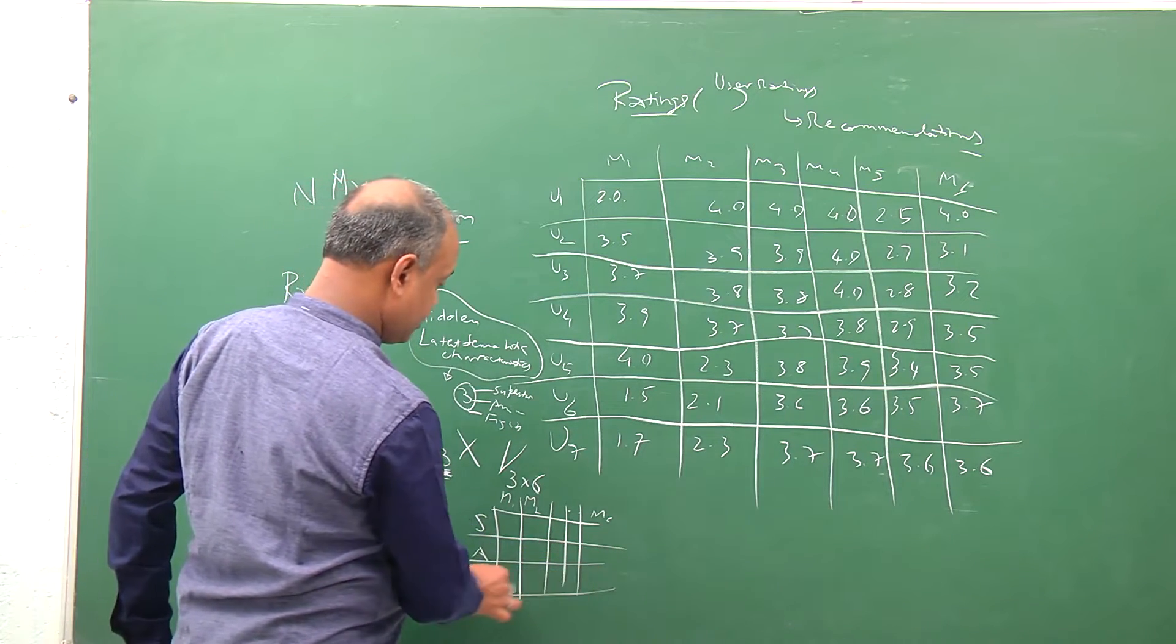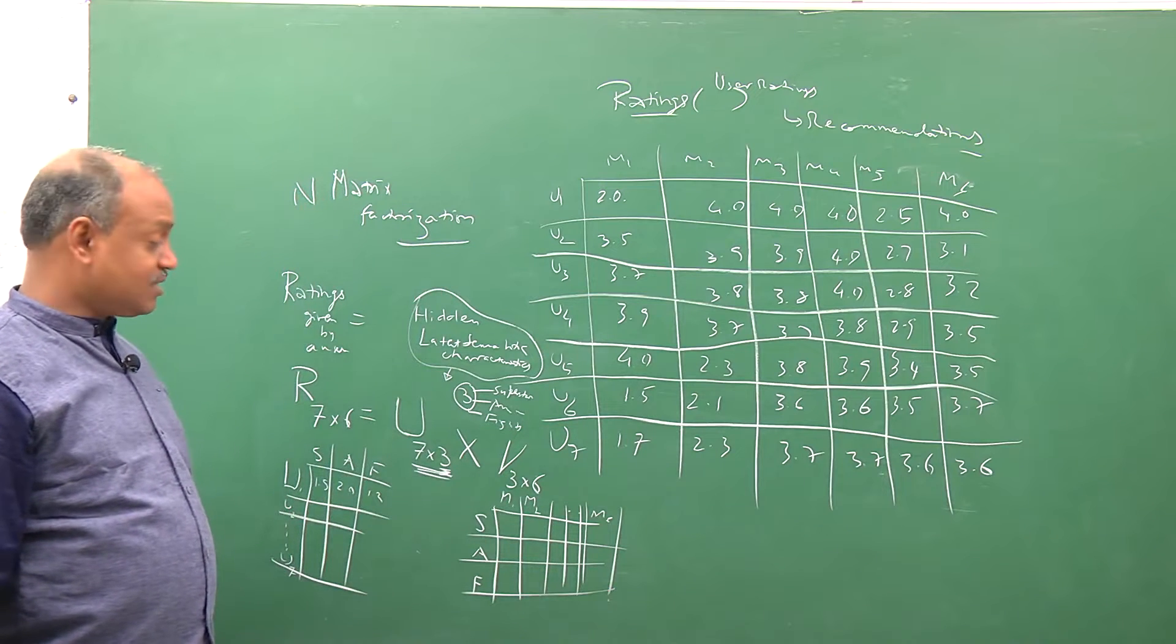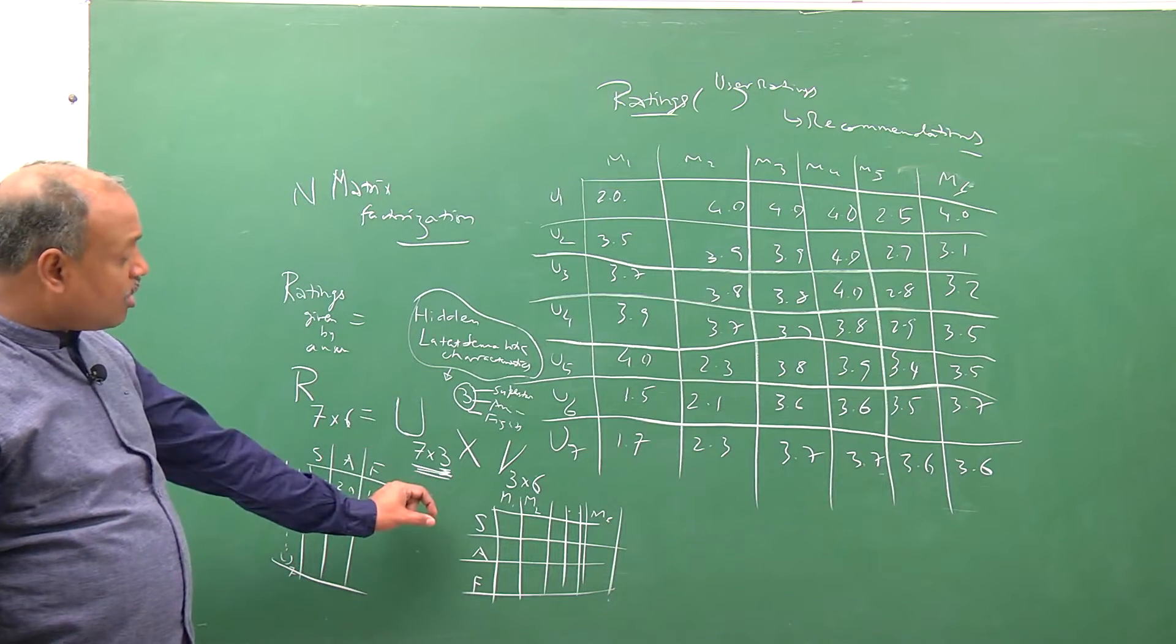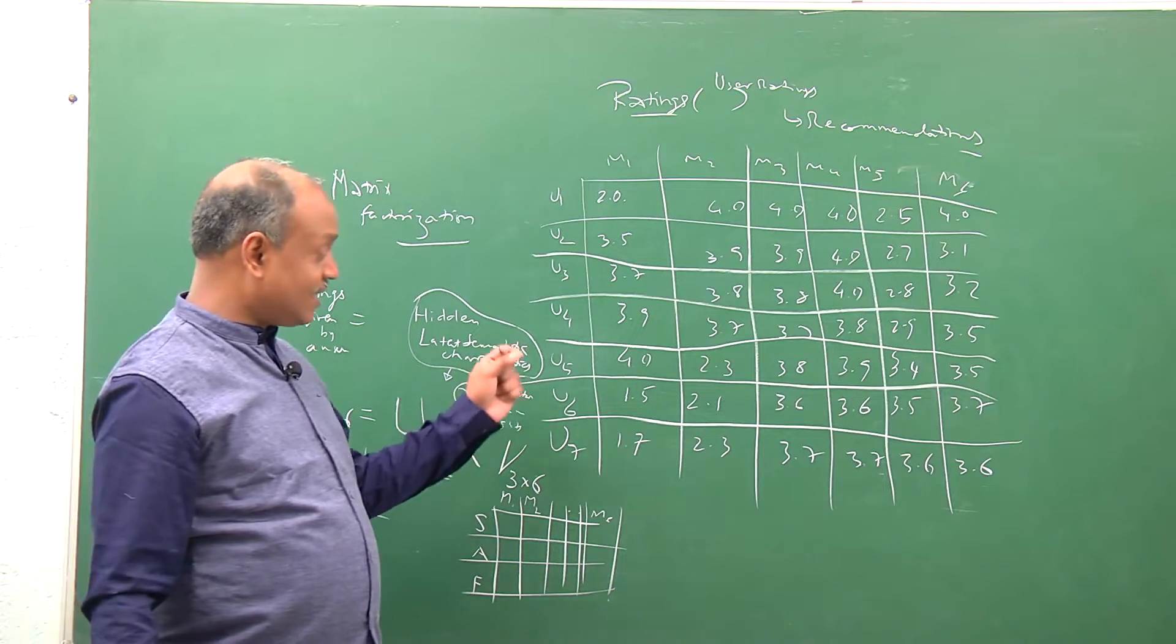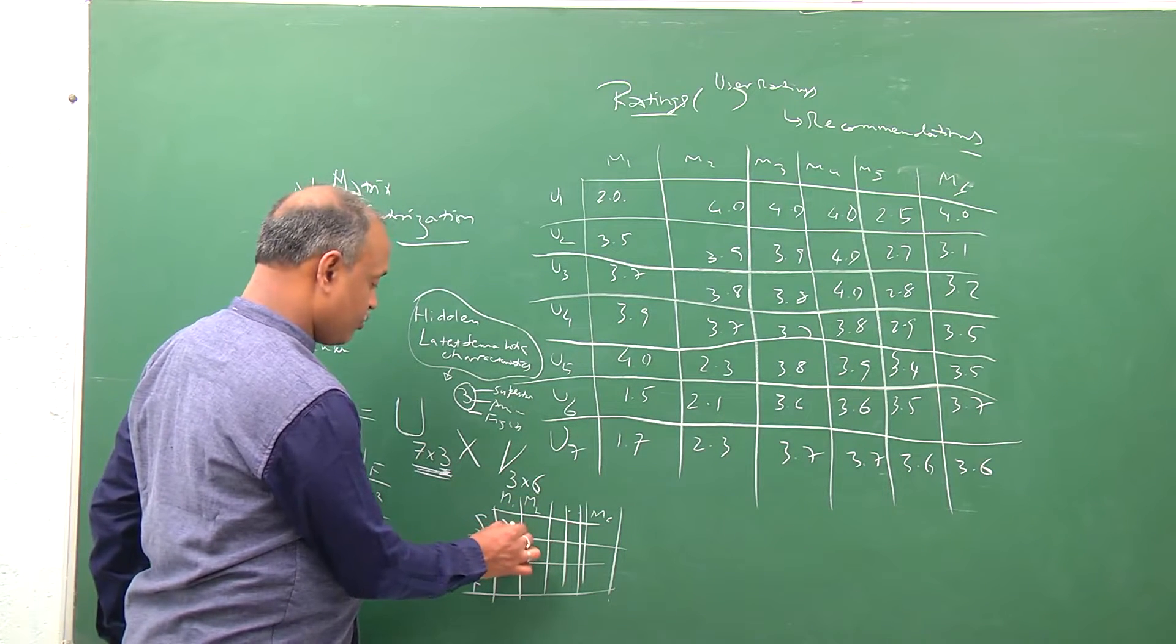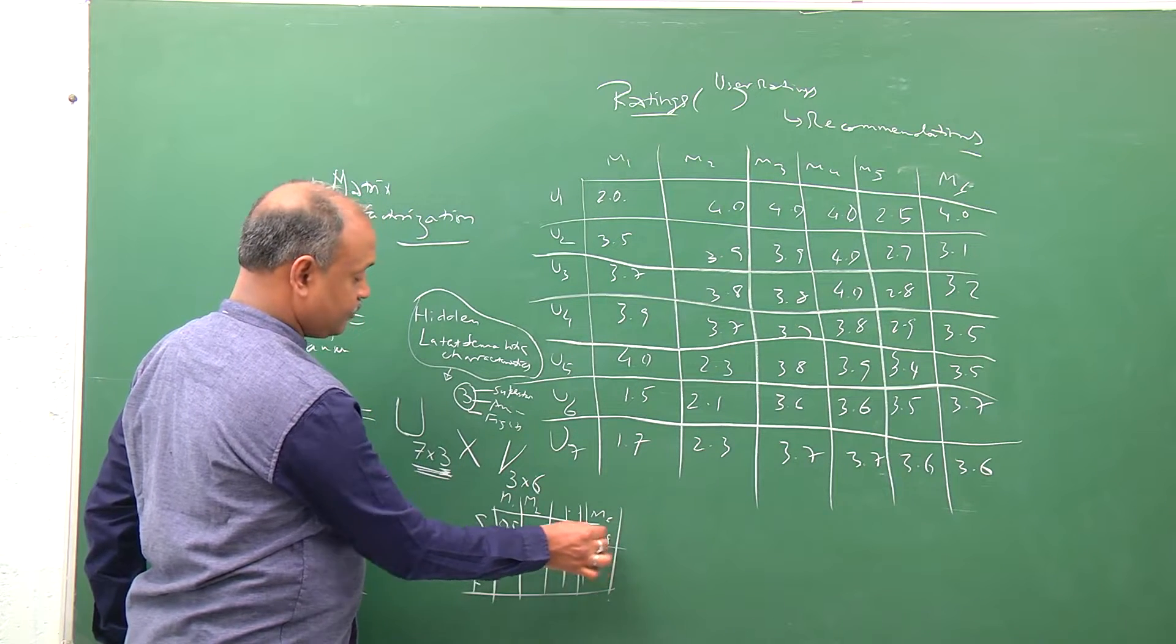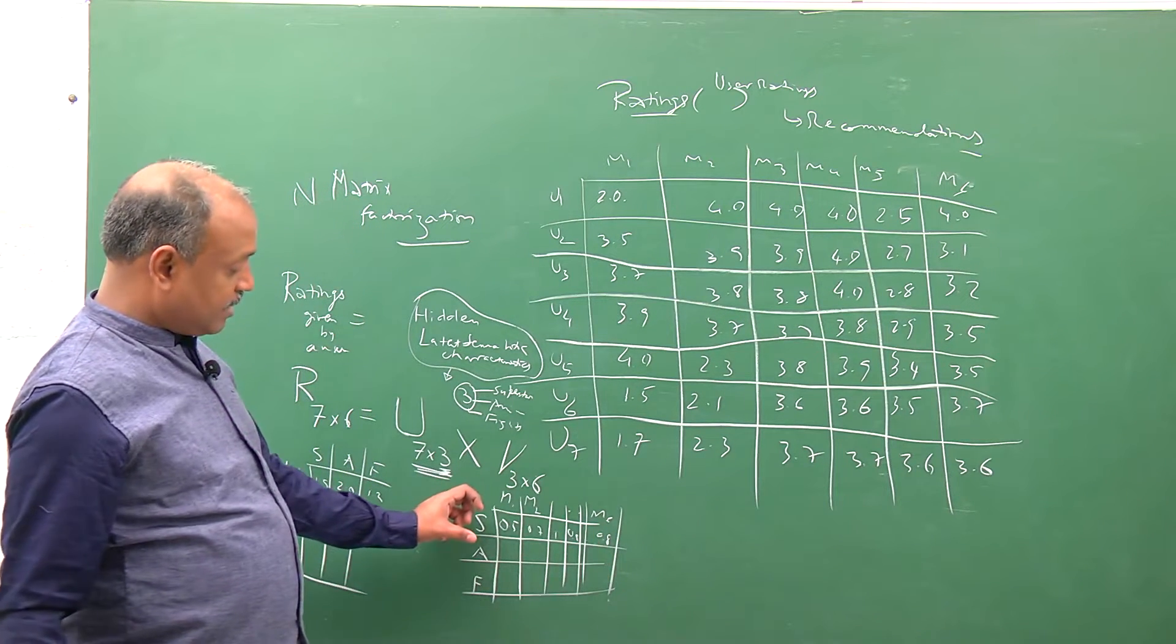So we form a three by six matrix which represents the question: how much of superstar characteristic is present in movie 1, movie 2, movie 5? It could be 0.5, 0.7, 1.0, 1.9, something like that.